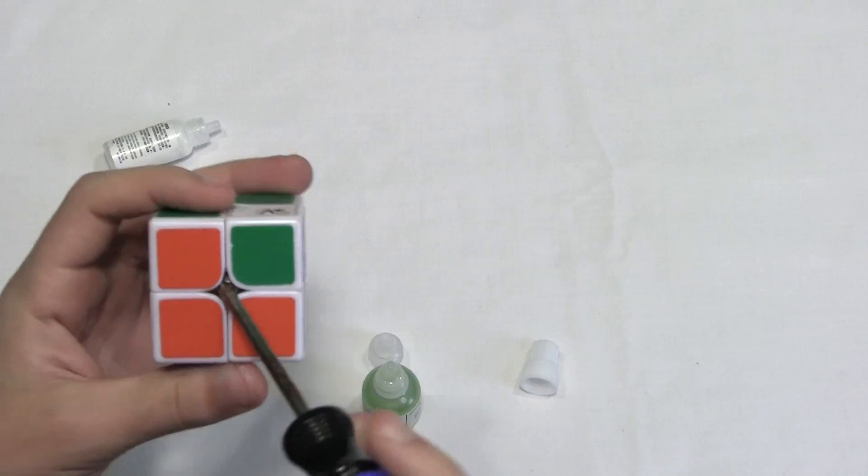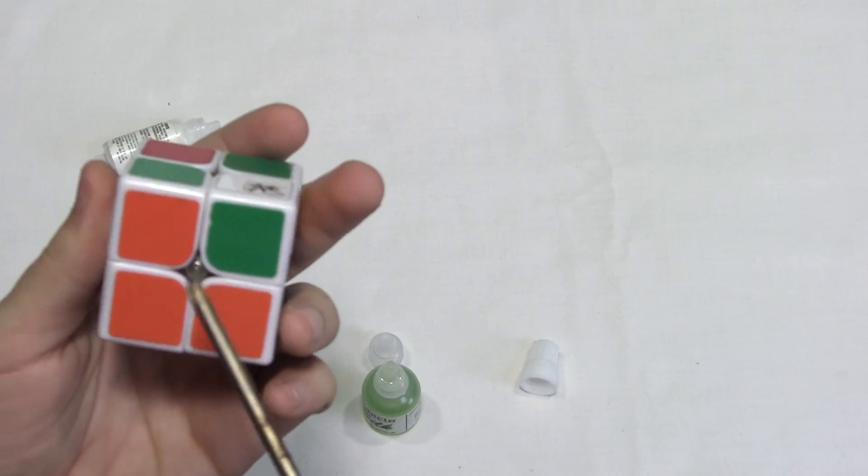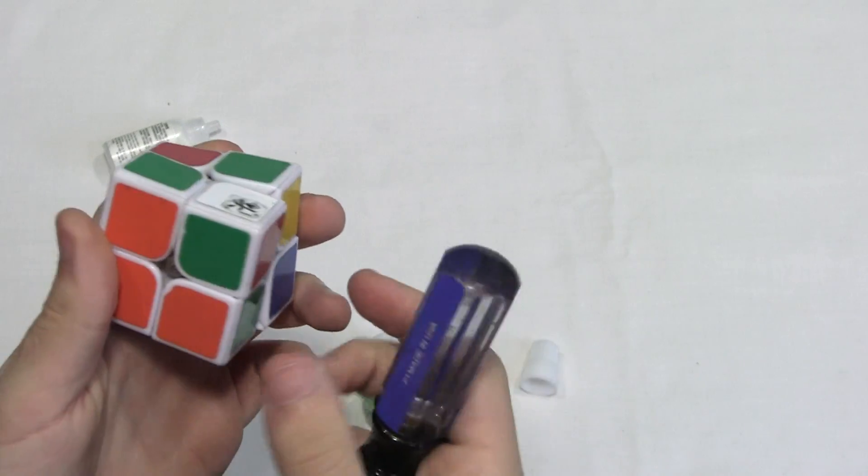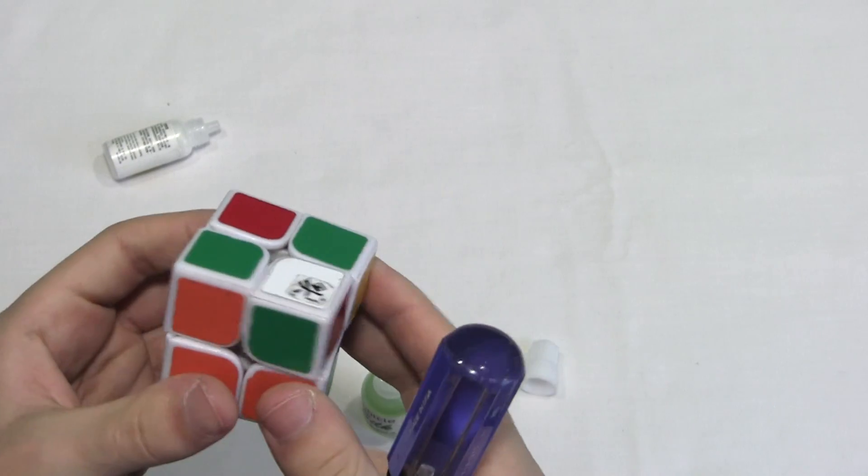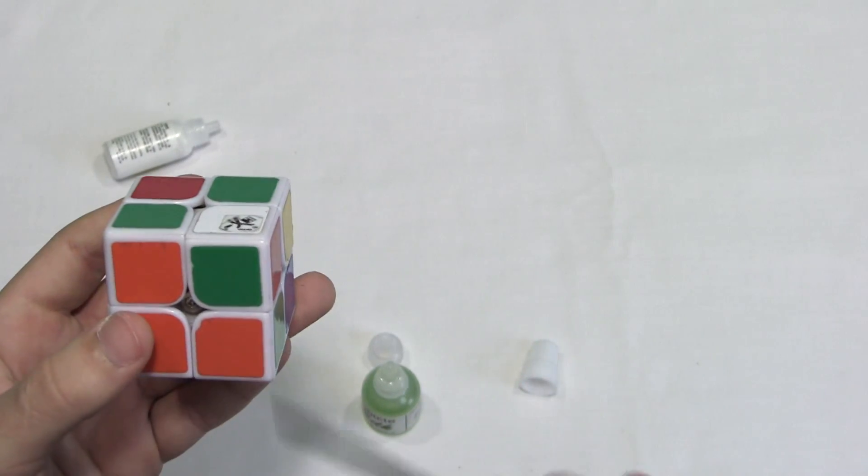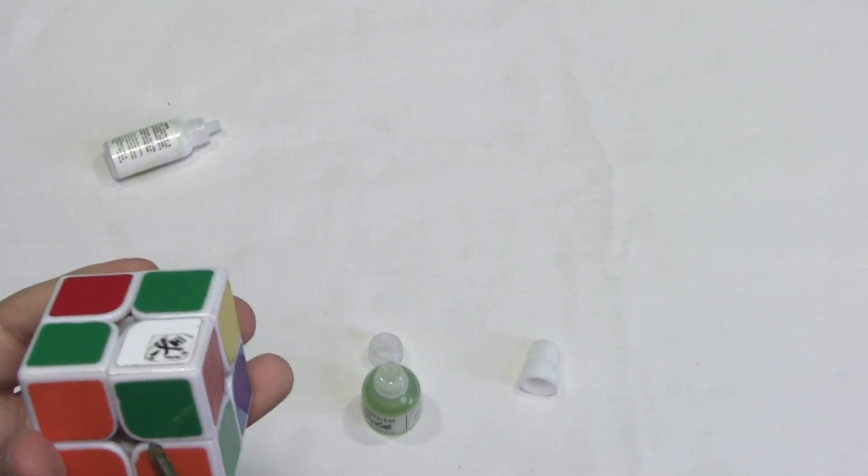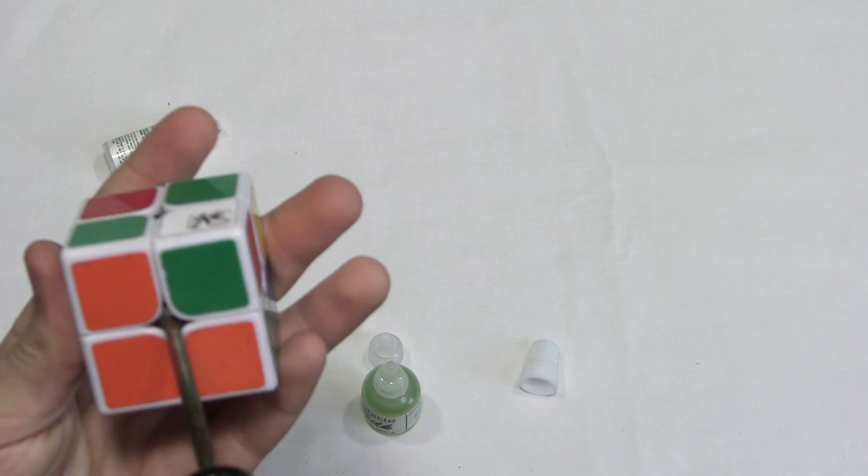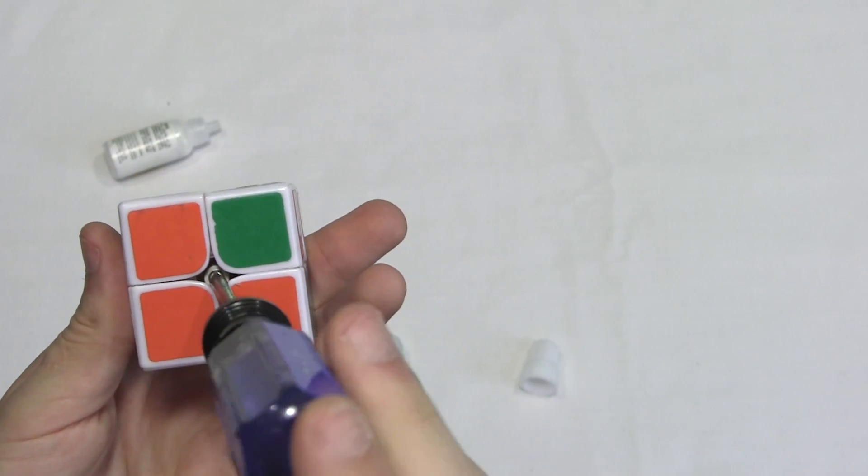But if it's too tight or too loose, and if the corner twists easily, you might want to tighten it. If it's locking up while you're turning it, you might want to loosen it. So you want to make sure it doesn't corner twist for the cubes that do corner twist. But this is how you tension it. Of course, going right will tighten it and going left will loosen it.